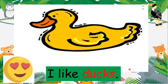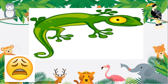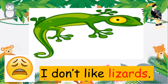What about this one? What animal is this? This is a lizard. Do you like lizard, class? I'm pretty sure you don't like lizard, right? Look at this face — this face is very not happy. So what do you say when you don't like an animal? You say: I don't like lizards.